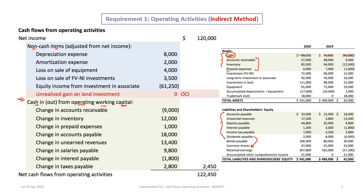The items we're concerned with are the current assets and the current liabilities sections. Accounts receivable went from $48,000 to $57,000 — that's an increase, which is actually an outflow of cash. When current assets increase, cash goes down; conversely, when current assets decrease, cash goes up. Inventory went from $94,000 to $82,000.